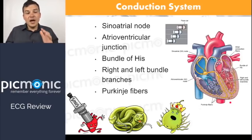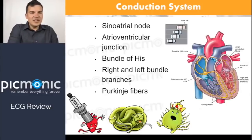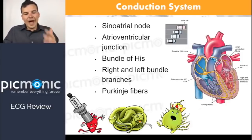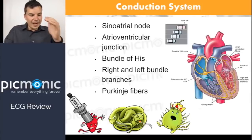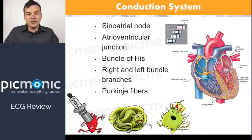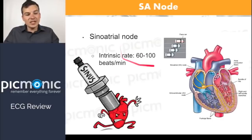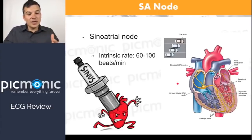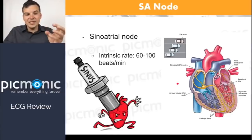Each part of the conduction system fires at different intrinsic speeds — it's really like a backup system. If one fails, the other one steps in. The sinoatrial node fires at an intrinsic rate of 60 to 100 beats per minute, which is essentially a sinus rhythm — firing from the normal place correctly. It fires from the SA node down to the right atrium, then down to the AV node, or atrioventricular junction.